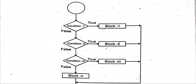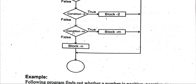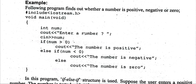یہ اس کا flowchart ہوتا ہے۔ Condition true ہے تو execute کرے گا اور وہیں سے باہر آ جائے گا۔ اگر false ہے تو next condition کے پاس جائے گا۔ اگر وہ true ہوگی تو execute کر کے باہر آ جائے گا، لیکن اگر وہ بھی false ہے تو next condition پر جائے گا۔ اگر کوئی condition true نہیں تو last block N کو execute کر دے گا۔